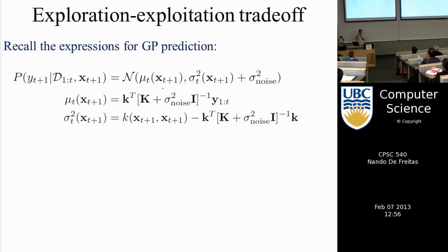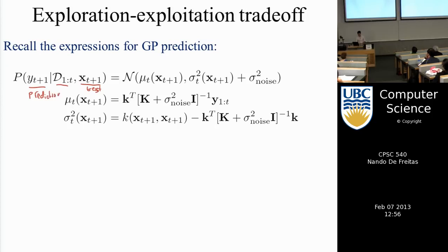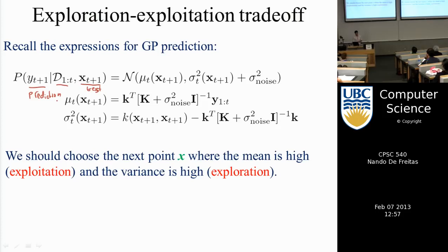From the previous class we know the expressions for a Gaussian process. If we have some data set and a new test point, our prediction is Gaussian with two statistics: a mean and a variance. If you know the mean and the variance, you know everything there is to know about the prediction y.